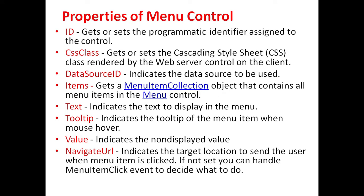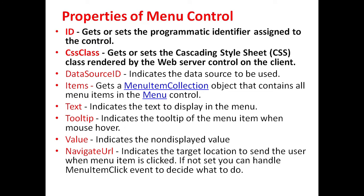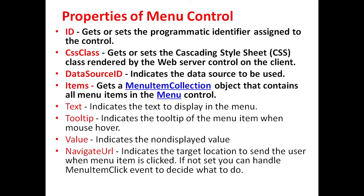Different properties of menu controls are: first is ID, which is used to get or set the programmatic identifier assigned to the control. CSS class property is used to get or set the cascading style sheet class rendered by the web server control on the client. Data source ID indicates the data source to be used. Items property gets a menu item collection object that contains all menu items in the menu control.